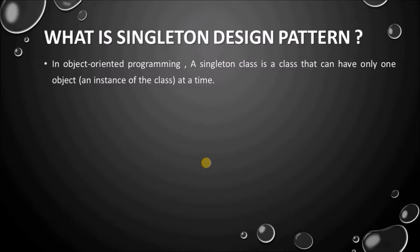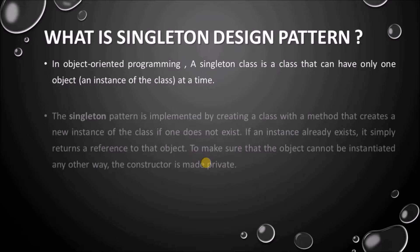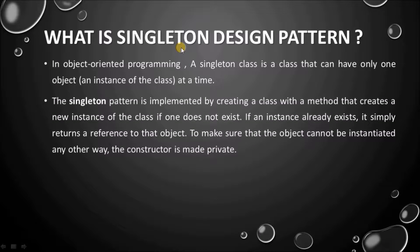In object-oriented programming, a singleton class is a class that can have only one object — an instance of the class — at a time. The singleton pattern is implemented by creating a class with a method that creates a new instance of the class if one does not exist. If an instance already exists, it simply returns a reference to that object. To make sure that the object cannot be instantiated any other way, the constructor is made private.